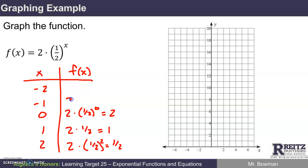When x is negative one, I get two times one half to the negative first. An easy way to find a fraction to a negative power is to make that the reciprocal of the fraction. That's two times two over one. That's four. When x is negative two, we've got two times one half to the negative second. That's two times two squared. That's eight.